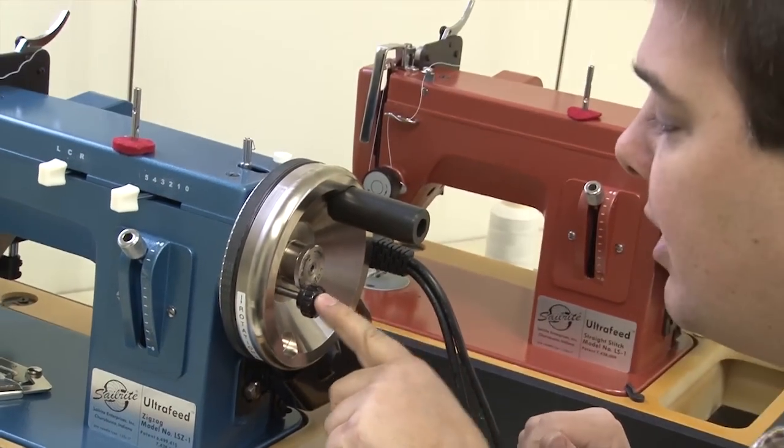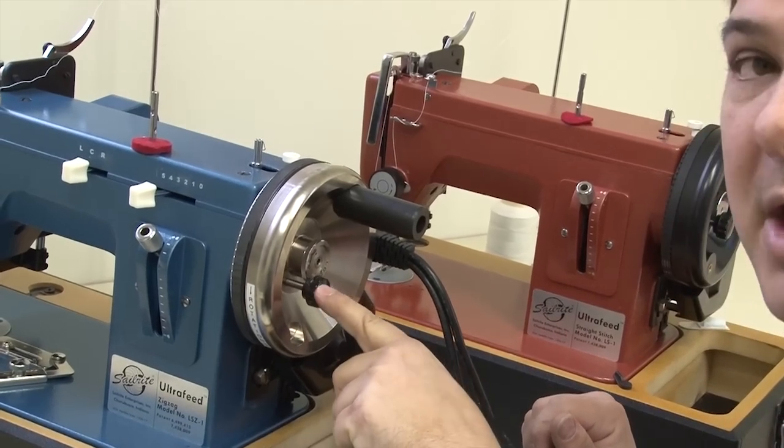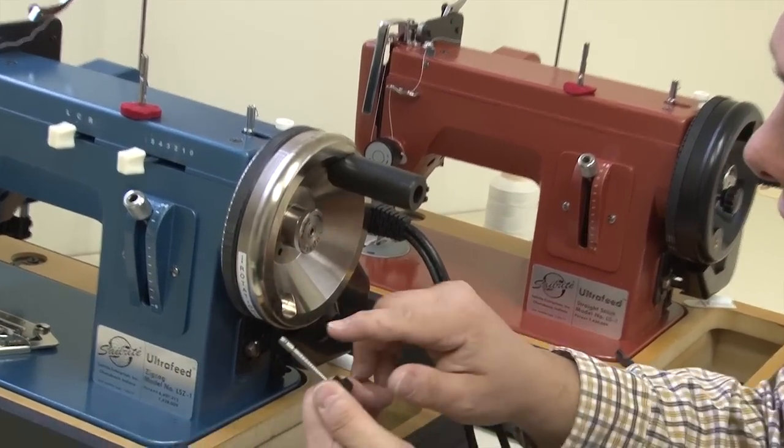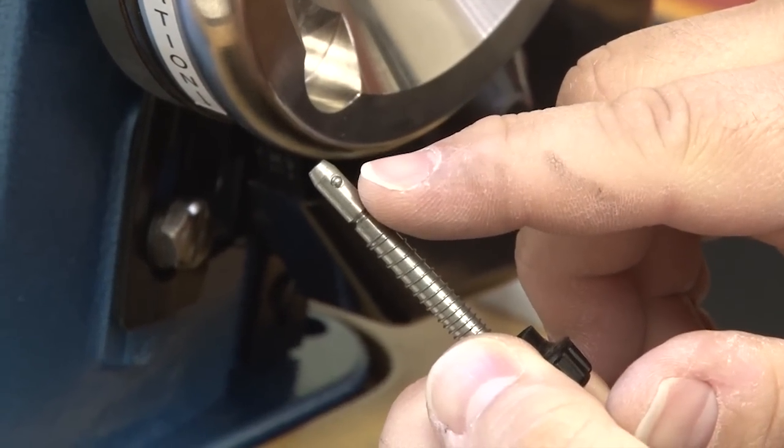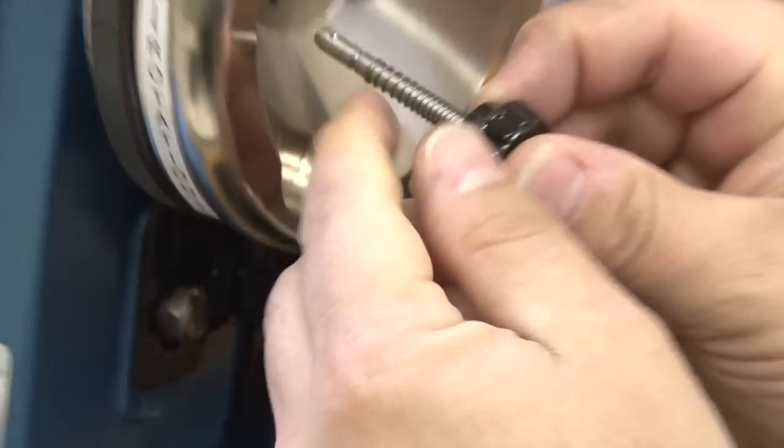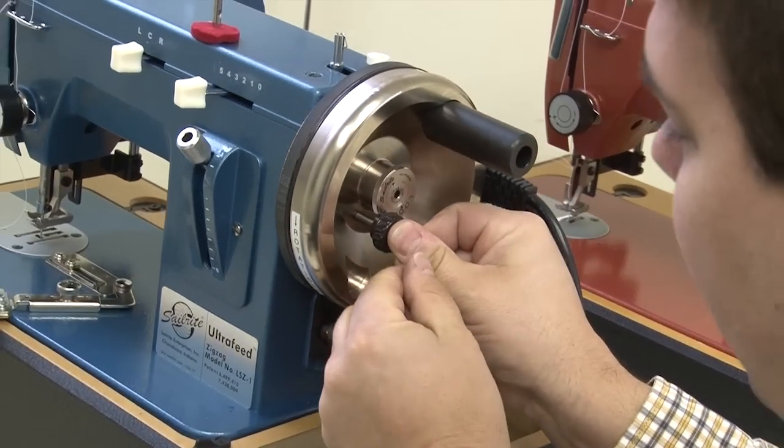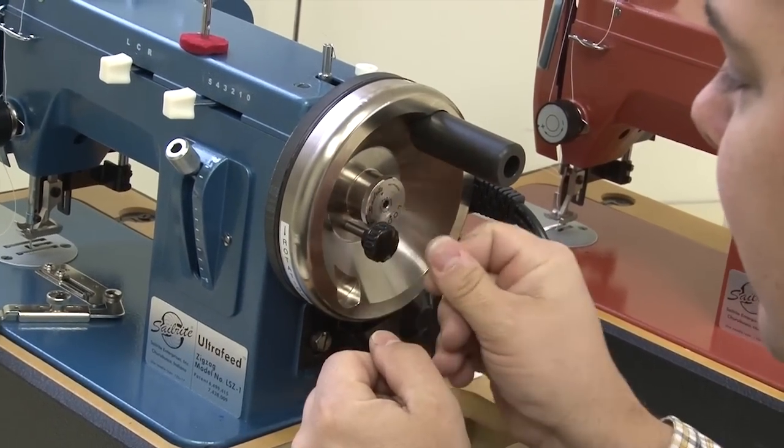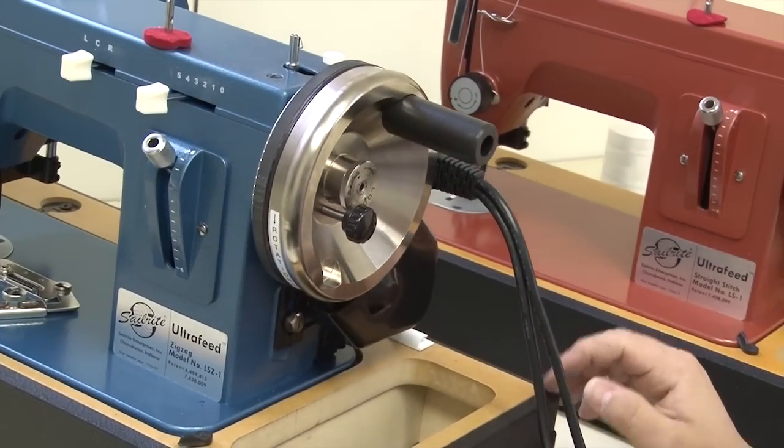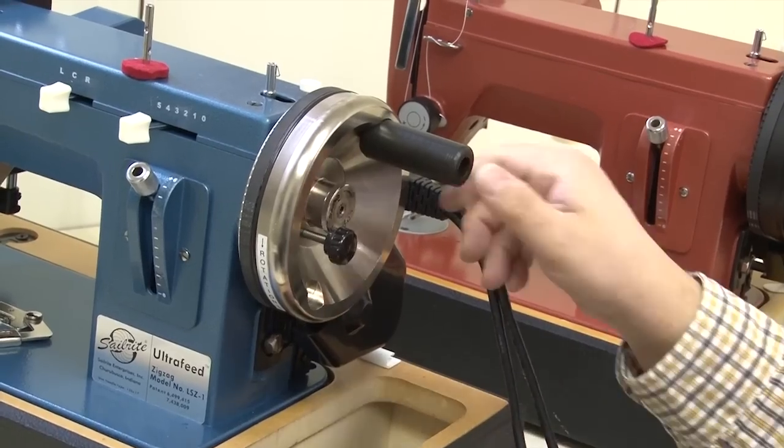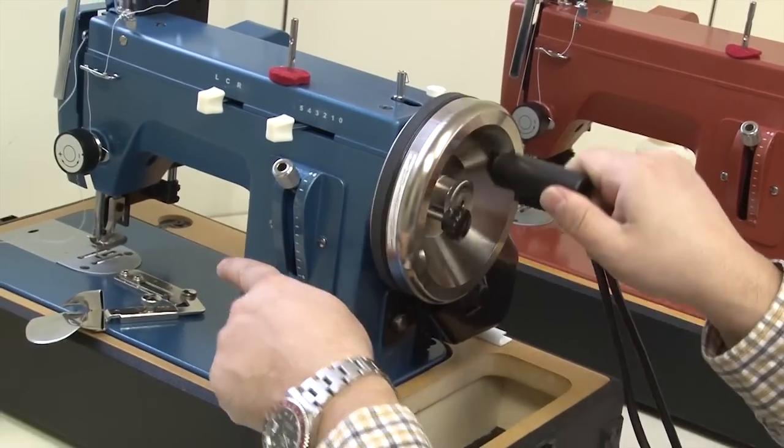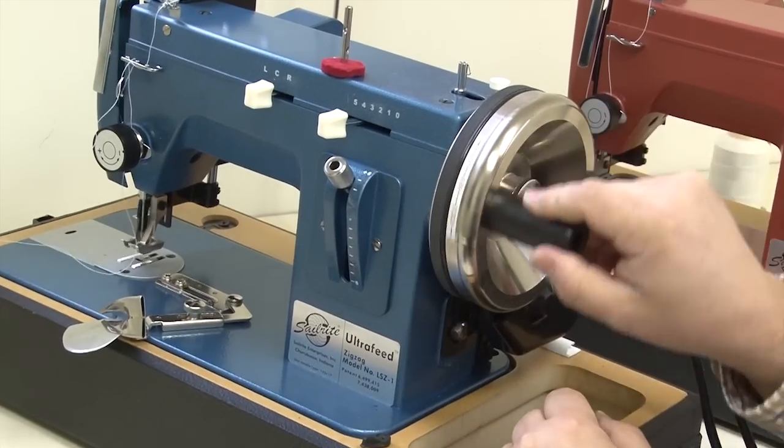When you push it in you'll notice that it pushes in and it'll pop out a little bit. It pops out to the point that that detent ball hits the back side of the wheel. So it'll go in all the way and then it pops out just a little bit. That's the way it should function. Now the wheel is locked, and when I rotate the flywheel you'll notice that our needle bar mechanism is going up and down.